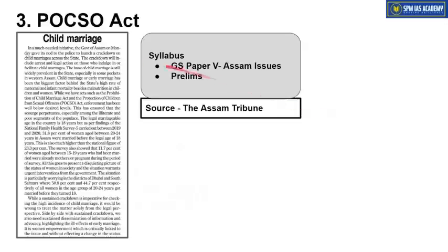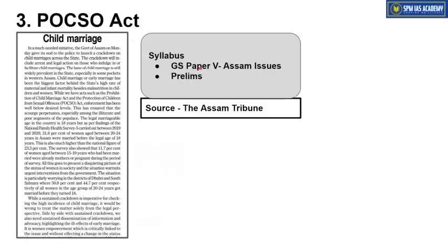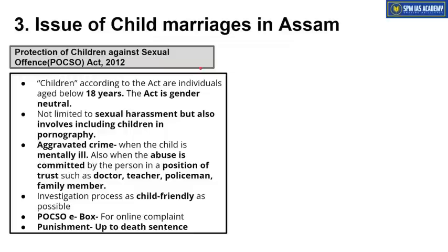Is topic ke basis pe bhi ek Prelims practice question humne rakha hai. Please attempt this question. The next article is about the POCSO Act and the problem of child marriages in Assam. This topic is important from GS Paper 5 Assam issues point of view. Sabse pehle POCSO Act ke baare mein samajhte hain, and then we will see the problem of child marriages in Assam aur dono kaise related hain.